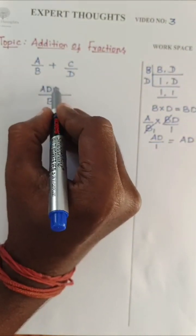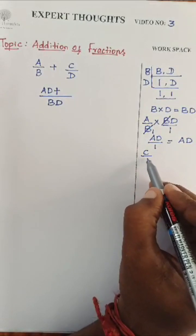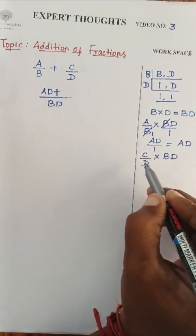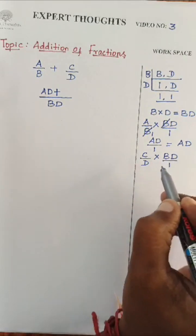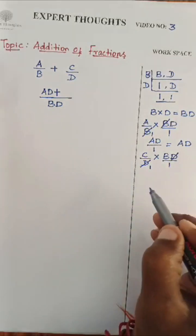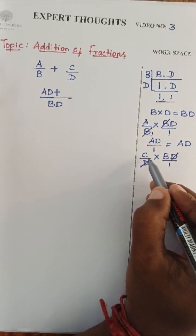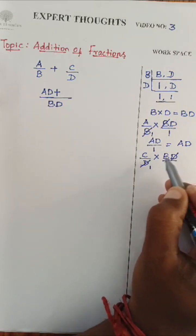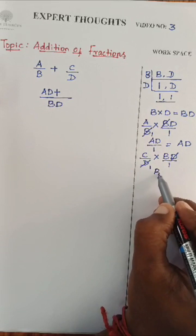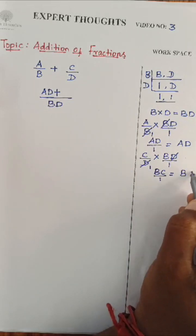Plus, once again, C by D into the LCM, B into D divided by 1. Denominator D and numerator D gets cancelled. The remaining term will be C into B. I will rearrange like it is nothing but B, C divided by 1, which is nothing but BC.